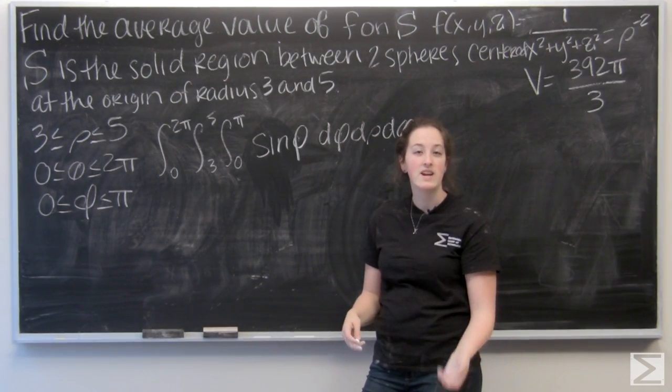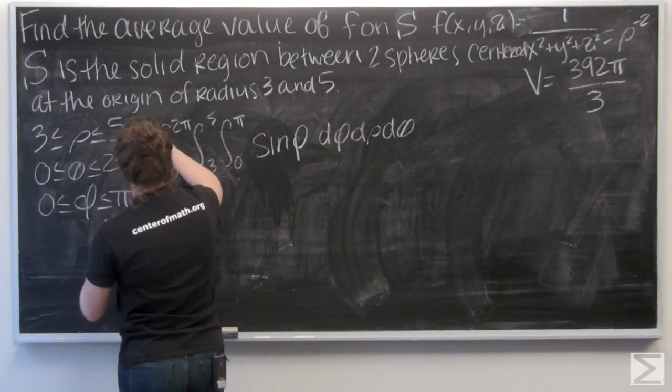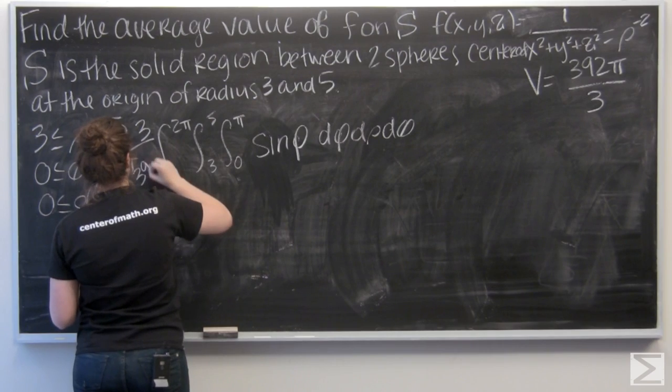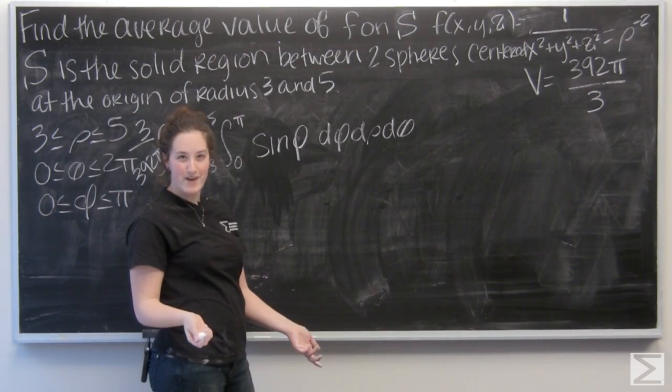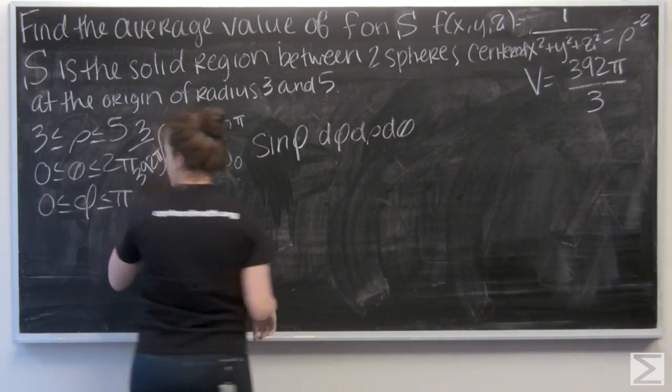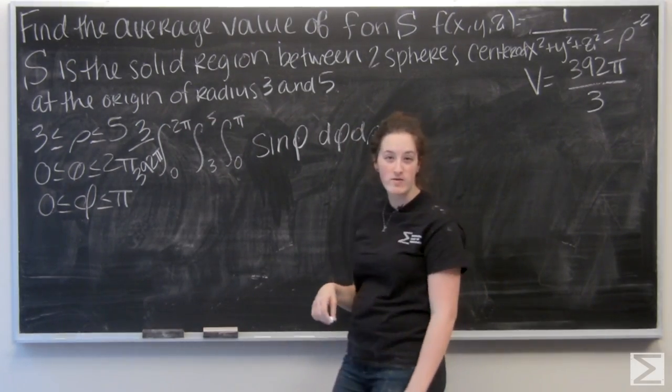So let's go ahead and get started. The integral of sine is negative cosine. Oh, what am I doing? Divide by your area. The most important part of finding average value, right? Okay, so I have my 3 over 392 pi out in front. I just flipped that fraction that we got for volume.